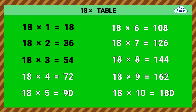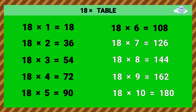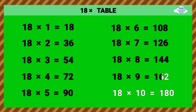Eighteen Times Table. 18 times 1 equals 18. 18 times 2 equals 36. 18 times 3 equals 54. 18 times 4 equals 72. 18 times 5 equals 90. 18 times 6 equals 108. 18 times 7 equals 126. 18 times 8 equals 144. 18 times 9 equals 162. 18 times 10 equals 180.